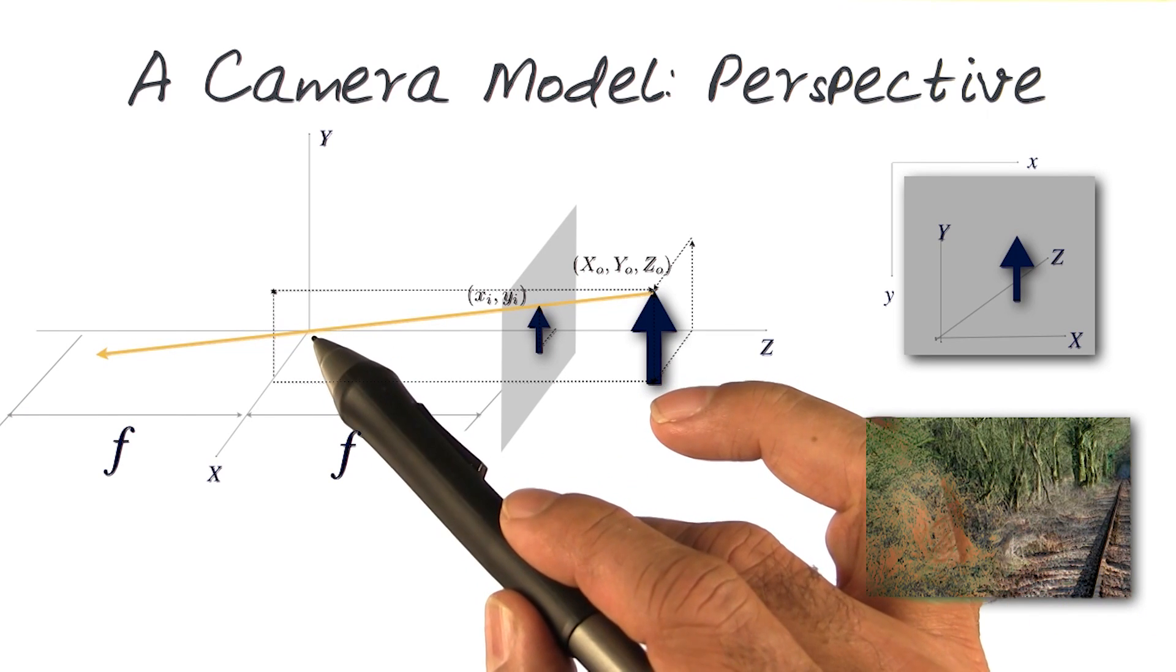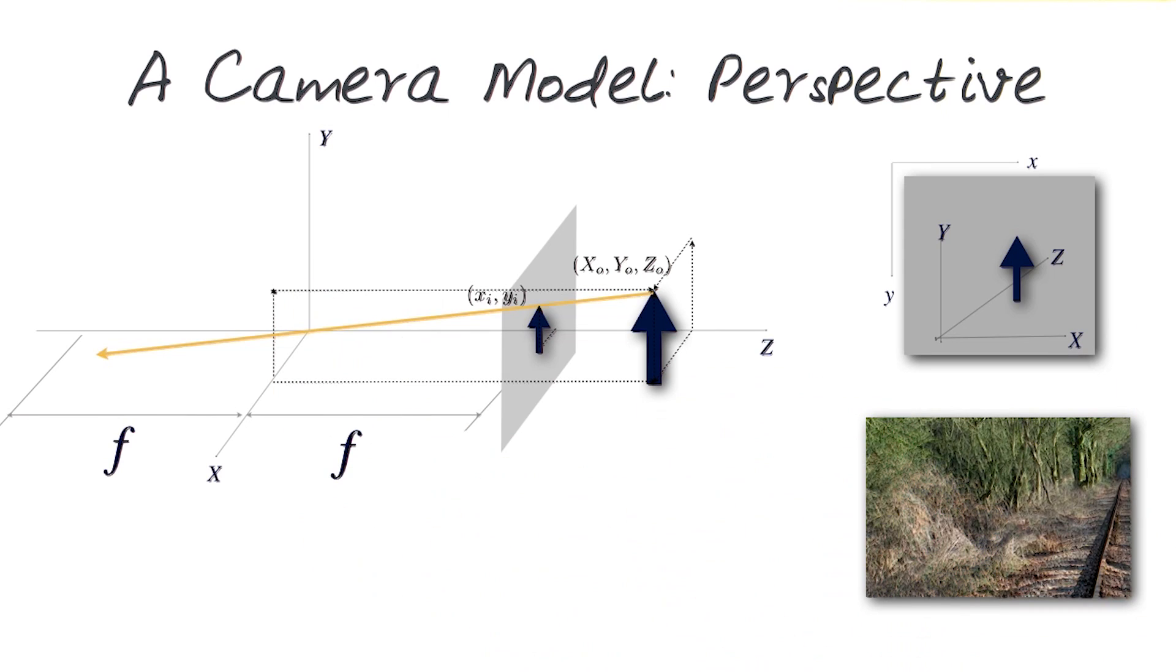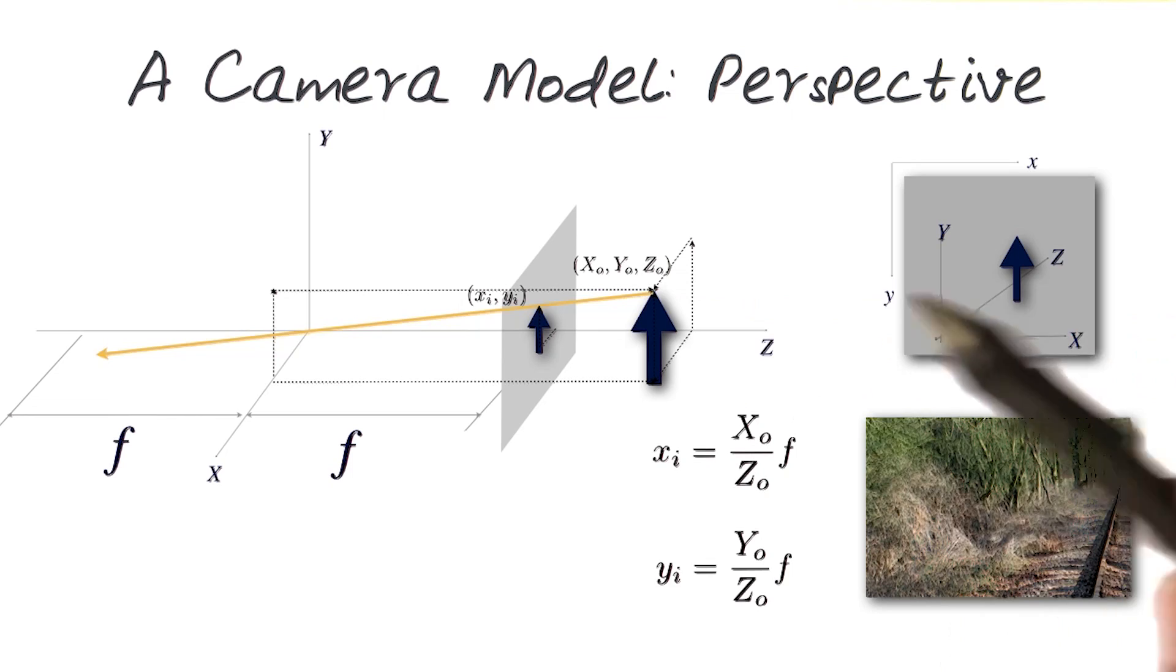Again, this is an idealized version, pinhole is this point here. We would be replacing this with a lens. We looked at these equations before. This is how we would compute the values of both x and y for each and every object, the location of the pixel. That would be related to where this point is on the scene.